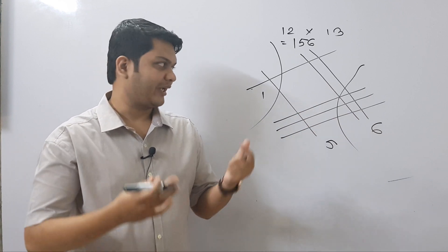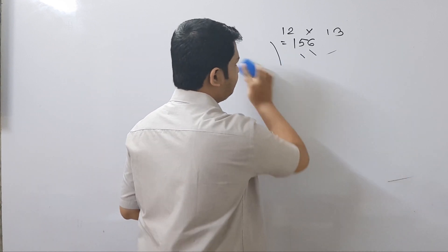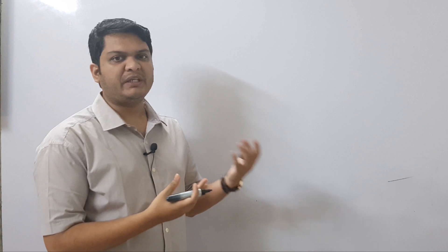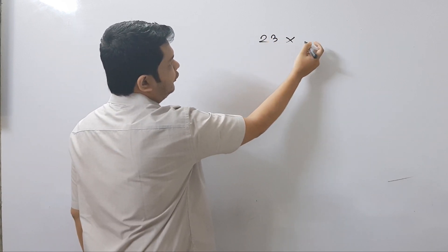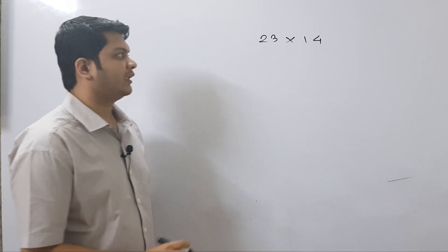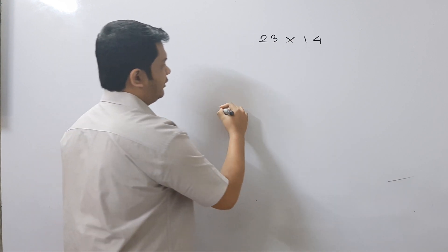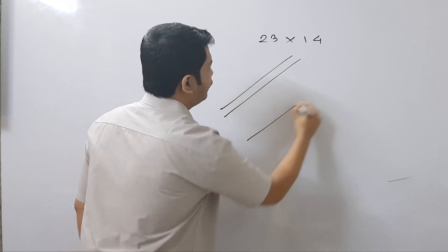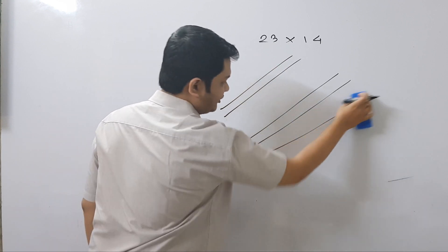Isn't it amazing? Let's see a few more examples. So let's multiply a 2-digit number which is a bit bigger than 12. Say we want to multiply 23 with 14. Let's start with 23. We can draw diagonally starting from this way, so we have two straight lines here for 2, and we need to draw three more straight lines for 3.